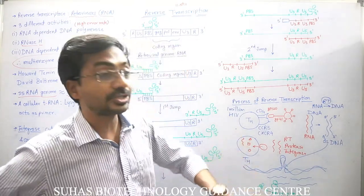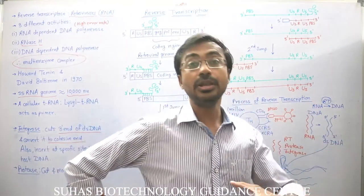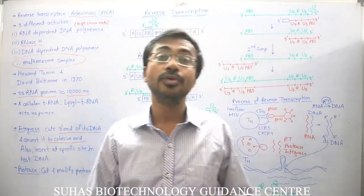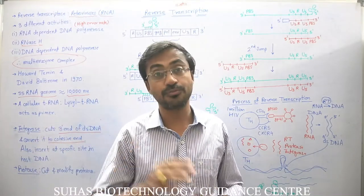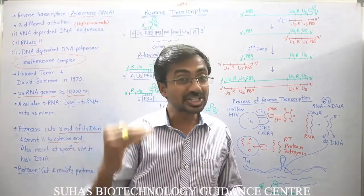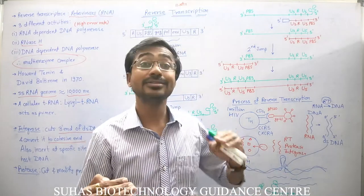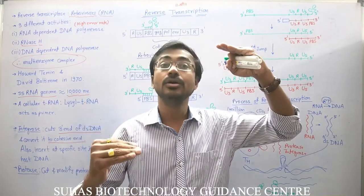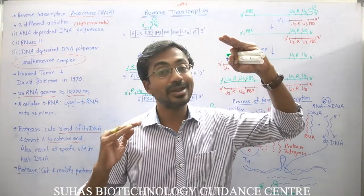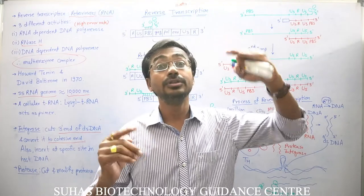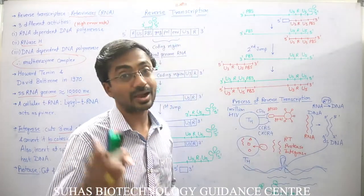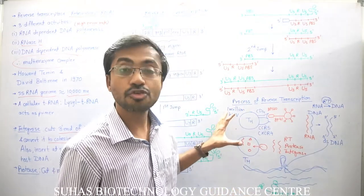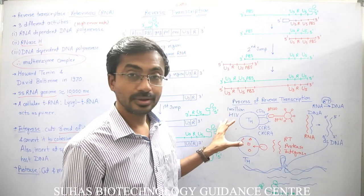As more and more HIV infects other T helper lymphocytes, infection keeps increasing. A time comes when the death rate of CD4-positive T helper lymphocytes far exceeds their generation rate, and this is how acquired immunodeficiency begins. This is the overview of reverse transcription through HIV infection.